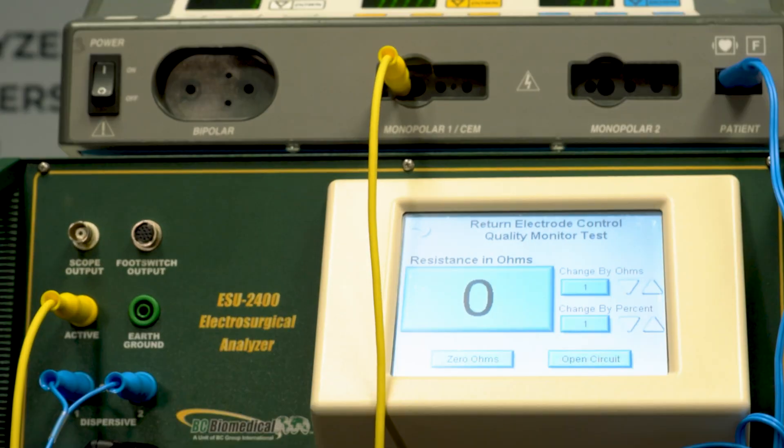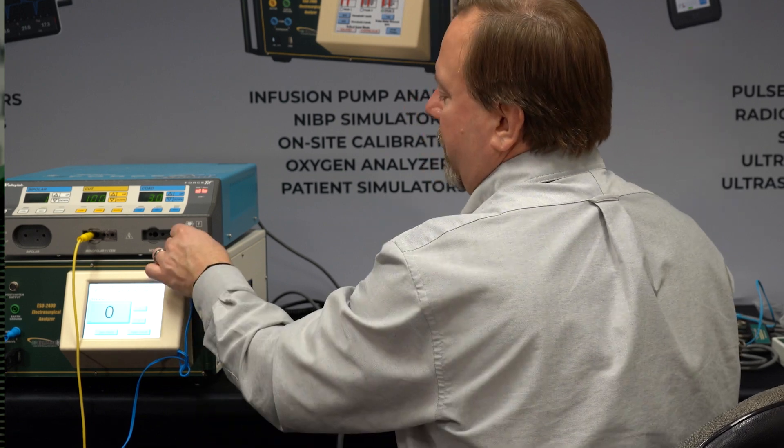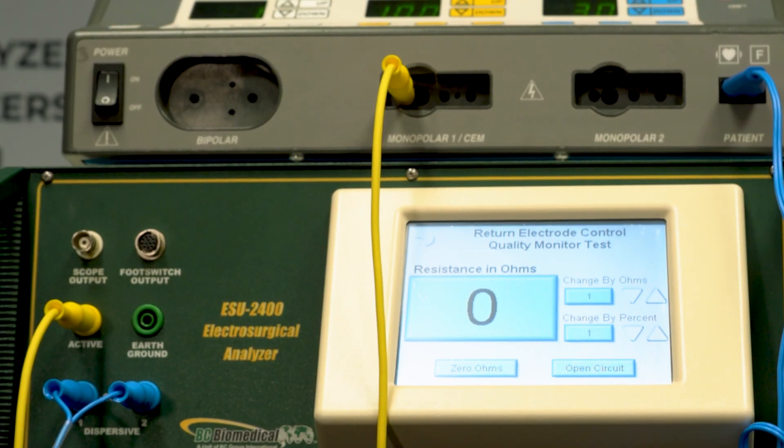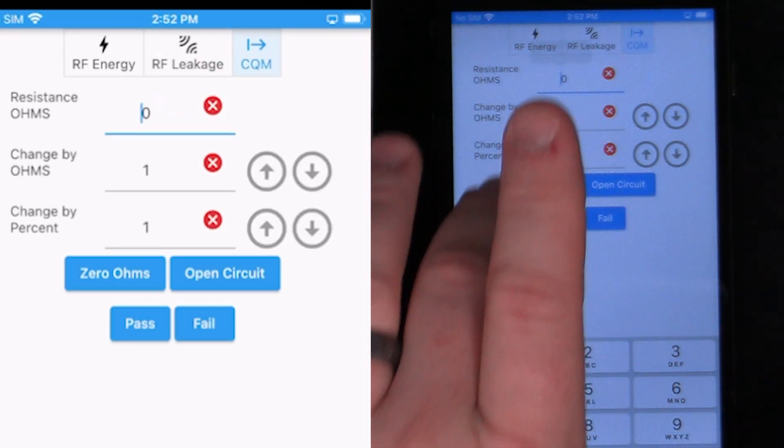Now we can see that the alarm is red, saying that it doesn't like that resistance. For a split pad, it can't have zero ohms. So it knows that that's invalid. We can go in here and set this to, let's say, 100 ohms. And now it still doesn't like that.